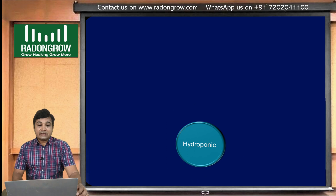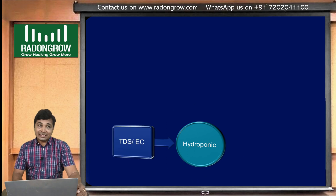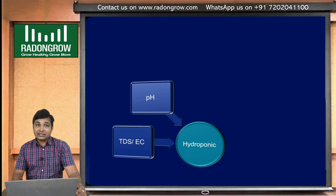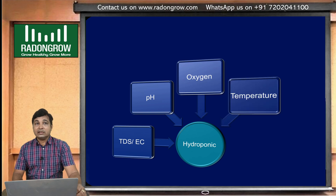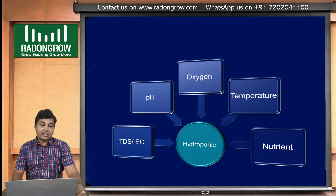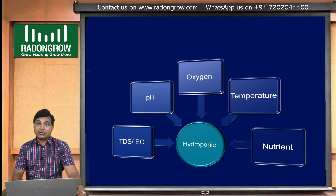The five parameters are: one is TDS, another is pH, one more is oxygen, fourth is temperature, and fifth is nutrient. These 5 parameters we will have to maintain to run a hydroponic system successfully.